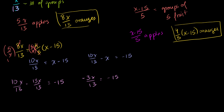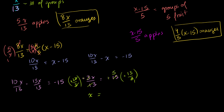We multiply both sides by minus 13 over 3. I picked that number so that those terms cancel out and the negatives cancel out, leaving just x on that side. On the right-hand side, the negatives cancel, 15 and 3 divide to give 5, and we're left with 5 times 13. So x is equal to 65.